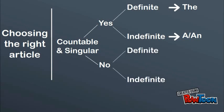If a noun is uncountable or plural and definite, you should use the article the. If, however, you have an uncountable or plural noun that is also indefinite, you should not include an article before the noun.